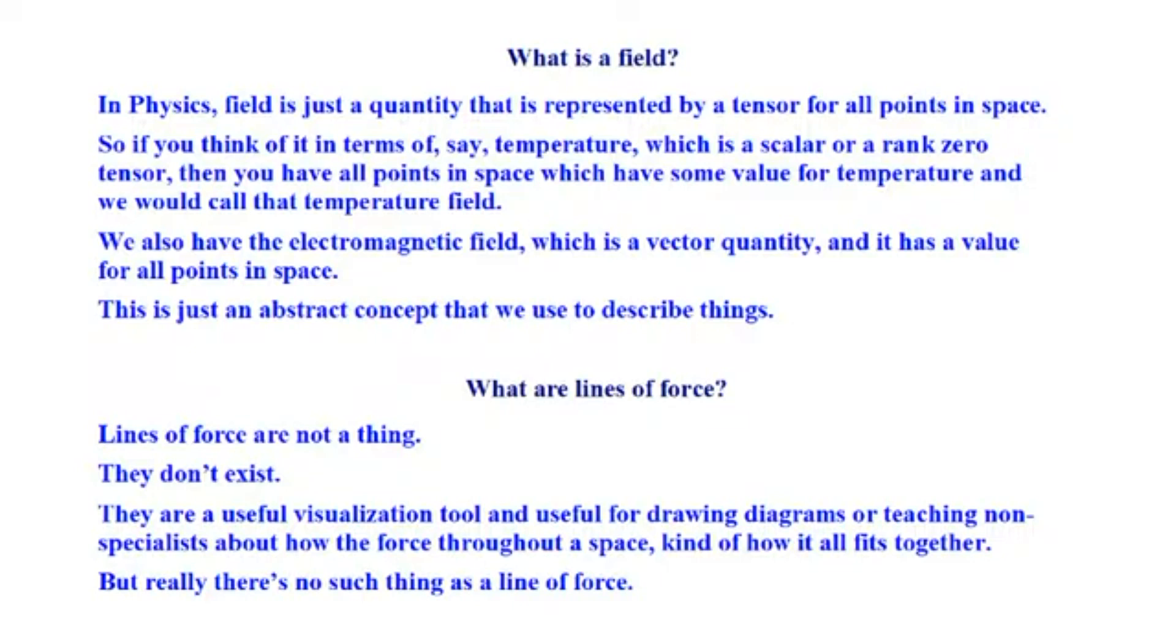So if you think of it in terms of, say, temperature, which is a scalar or your rank zero tensor, then you have all points in space which have some value for temperature, and we would call that temperature field. So we have a temperature field. So what is he talking about? A bunch of numbers in a region. What are those numbers? They represent how hot something is or whatever.